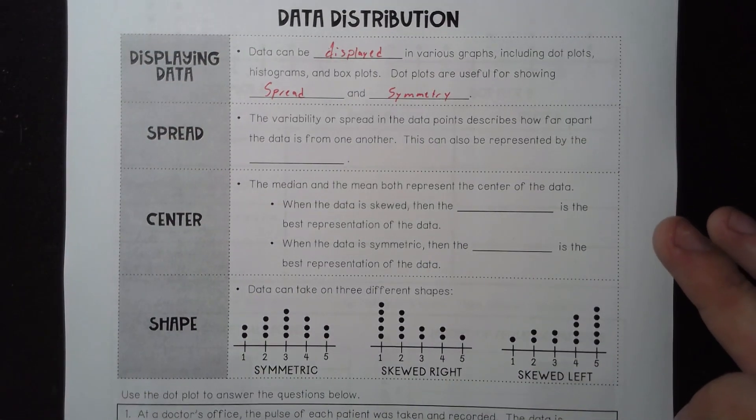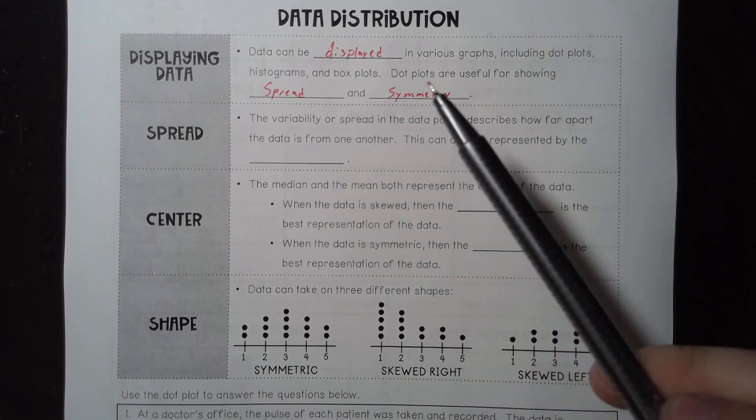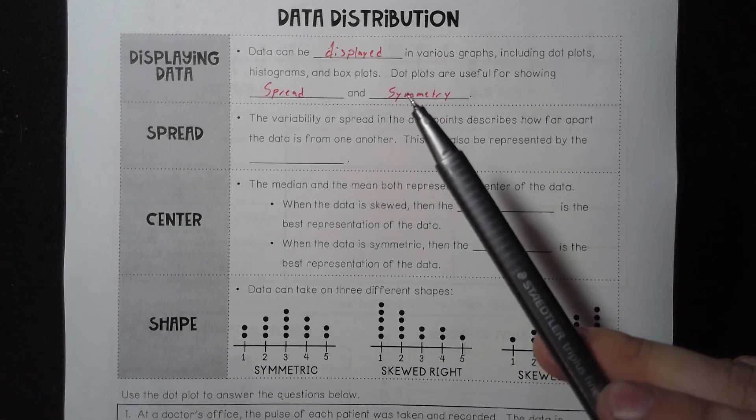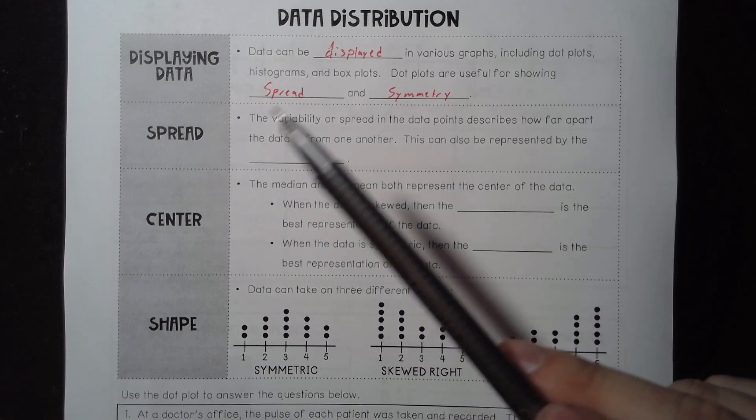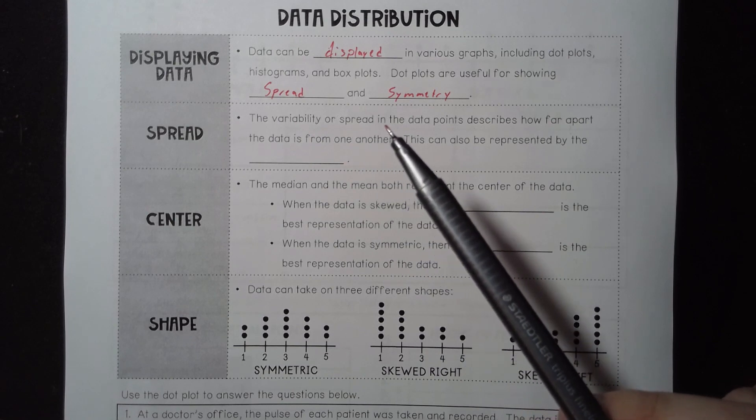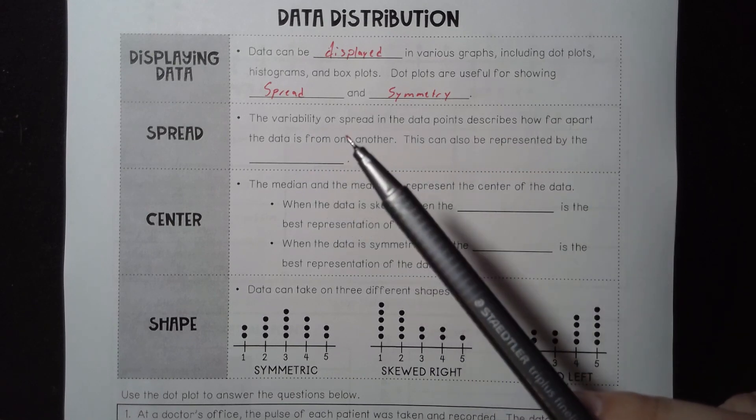When you have a dot plot, out of those three - dot plots, histograms, and box plots - dot plots are going to be the most accurate. They're going to have the most amount of information that you can gain from them. What spread is, when we use that word, spread is variability, or the spread in data points.